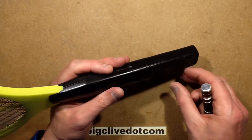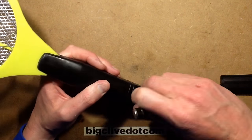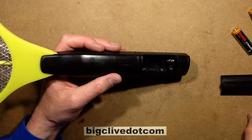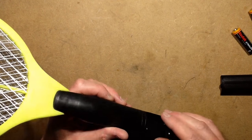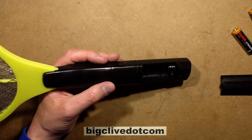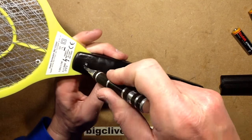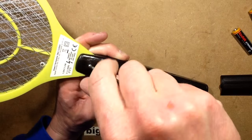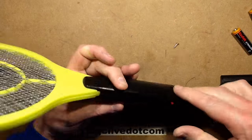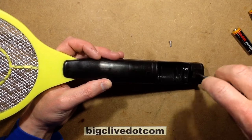So let's open it up. This thing takes two double A cells. They last a modest length of time, but keep in mind that this isn't used an awful lot. It's not run all the time. It just gets used in little bursts. So I see there's a screw up here which I think I should take out. Maybe I shouldn't have taken that one out. I'll soon find out. And two screws down here.